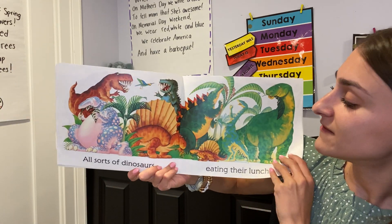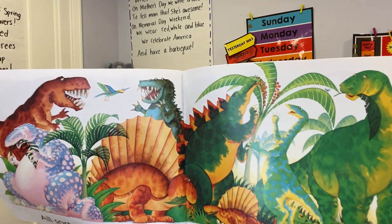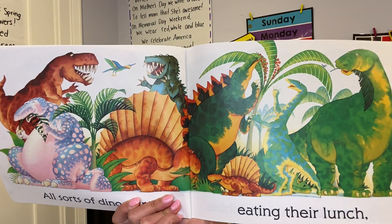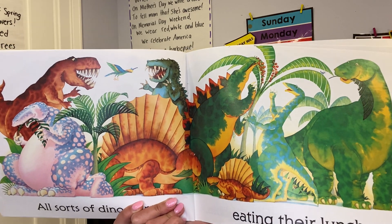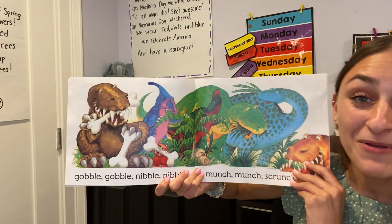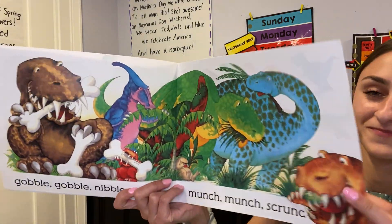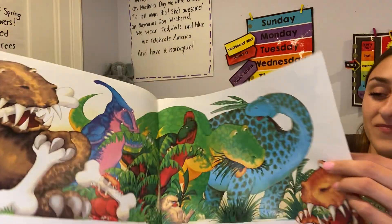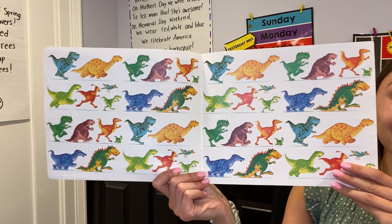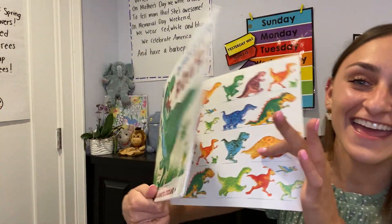All sorts of dinosaurs eating their lunch. Take a look at all those different dinosaurs. Oh my goodness. Gobble, gobble. Nibble, nibble. Munch, munch. Crunch. And look at the last page. Those different colorful dinosaurs. The end.